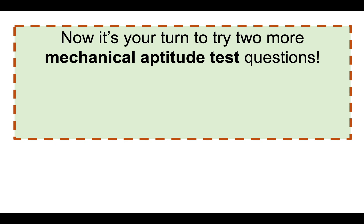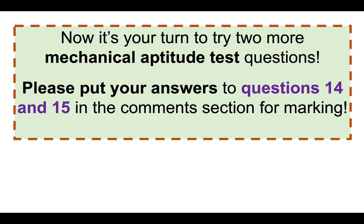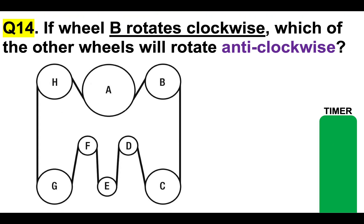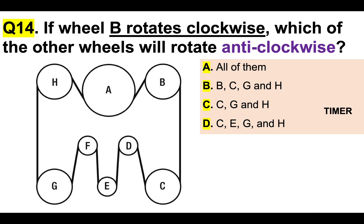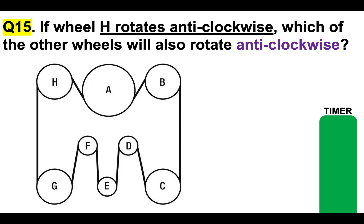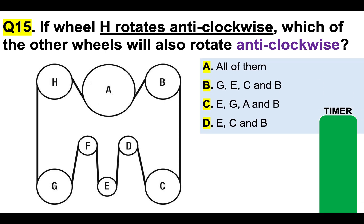Now it's your turn to try two more mechanical aptitude test questions. Put your answers to questions 14 and 15 in the comments section below for marking. Question 14: if wheel B rotates clockwise, which of the other wheels will rotate anti or counterclockwise? Options: A — all of them; B — B, C, G and H; C — wheels C, G and H; or D — wheels C, E, G and H. Question 15: if wheel H rotates anti or counterclockwise, which of the other wheels will also rotate anti or counterclockwise? Options: A — all of them; B — wheels G, E, C and B; C — E, G, A and B; or D — E, C and B. Don't forget to read the question carefully.